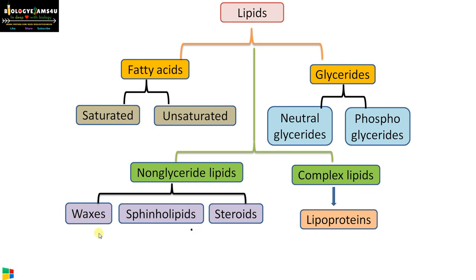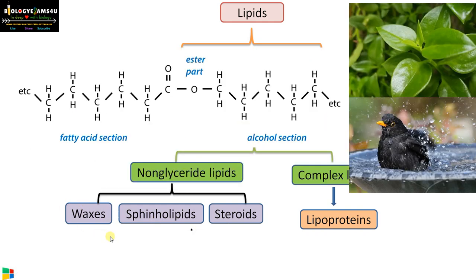First, let us see what waxes are. Waxes consist of a fatty acid region and an alcohol region joined by an ester linkage. Waxes are present on leaf surfaces — this wax coating on leaves makes them waterproof. Also found in the feathers of birds, making them waterproof as well.